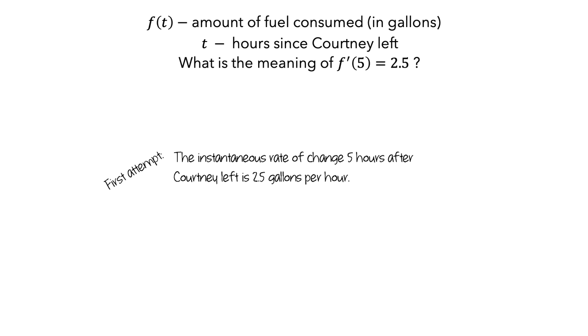However, it does not convey much additional meaning. In particular, it doesn't explain what the instantaneous rate of change actually means in the context of Courtney's trip. So we need to come up with a better explanation. To help us think about the potential candidates, let's make a graph of f.